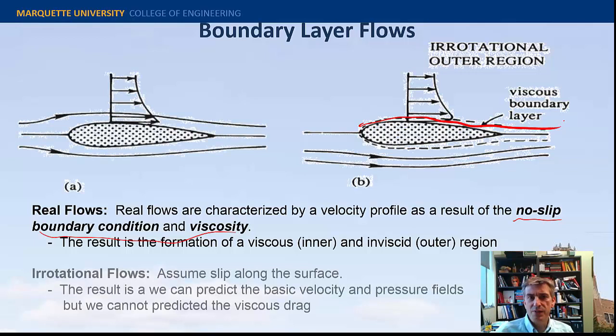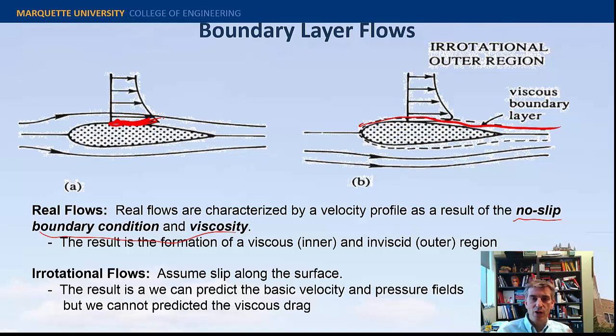If there is no no-slip boundary condition, the fluid is free to slip along the surface — the velocity vector is large right on the surface, which is an inviscid or irrotational flow field. We're going to work specifically on the viscous core. There's an inner and outer flow, and there was an idea that people would asymptotically match these two.